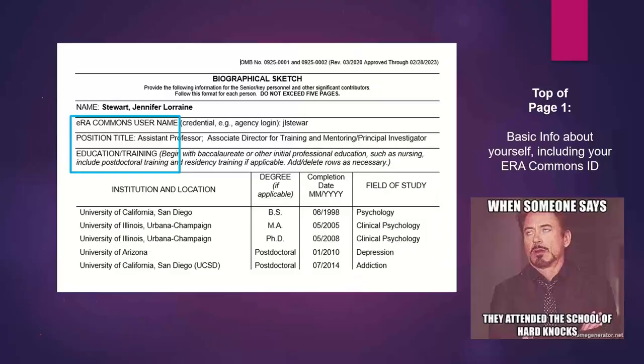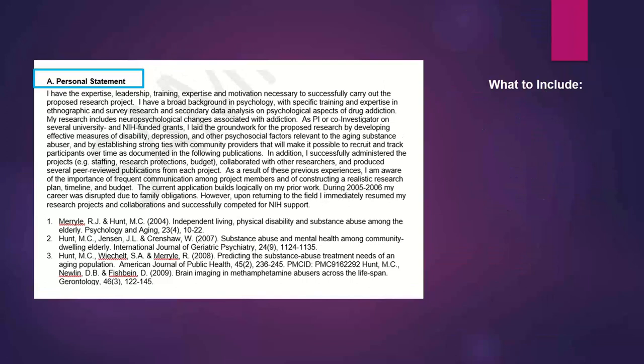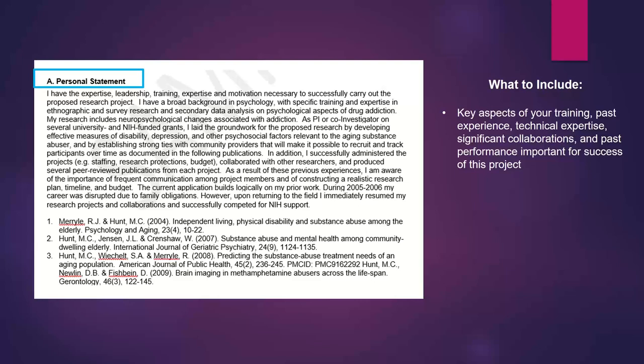Here's what the form looks like. Under your name, it asks for your ERA Commons username, your position title, and your education and training — basic info about yourself. At the bottom of that page in Section A, here is where you make your case as to why you're well-suited for your role in your project. State: I have the expertise, leadership, training, and motivation to carry out this project, and then list your skills. What to include: key aspects of your training, past experience, technical expertise, significant collaborations, and past performance important for the success of this project.